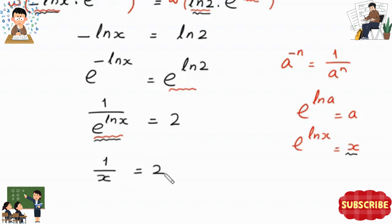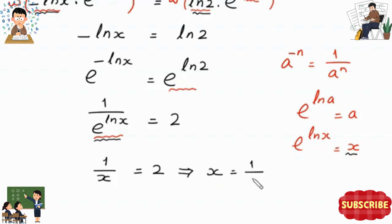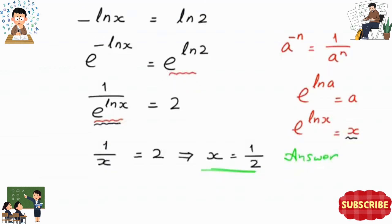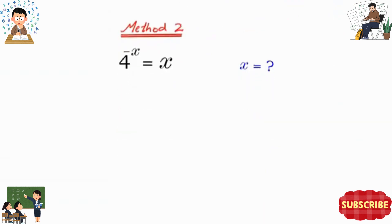Multiplying both sides by x and dividing by 2, we get x equals 1 over 2. This is the final answer from Method 1. Now let us solve the same equation by Method 2.